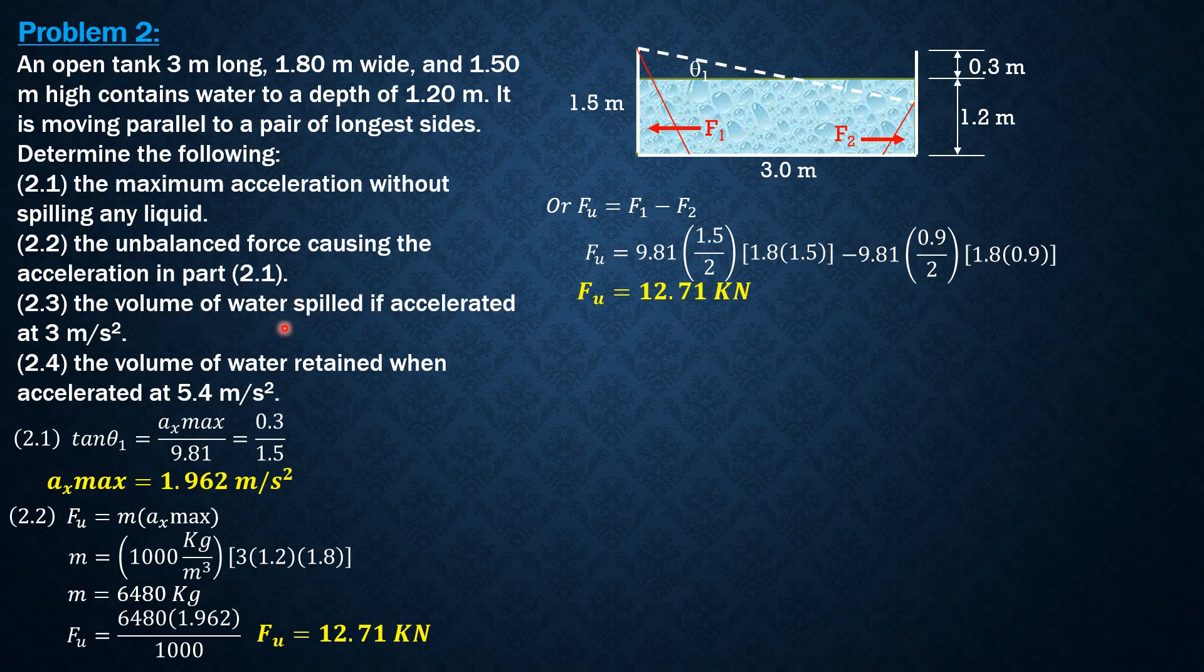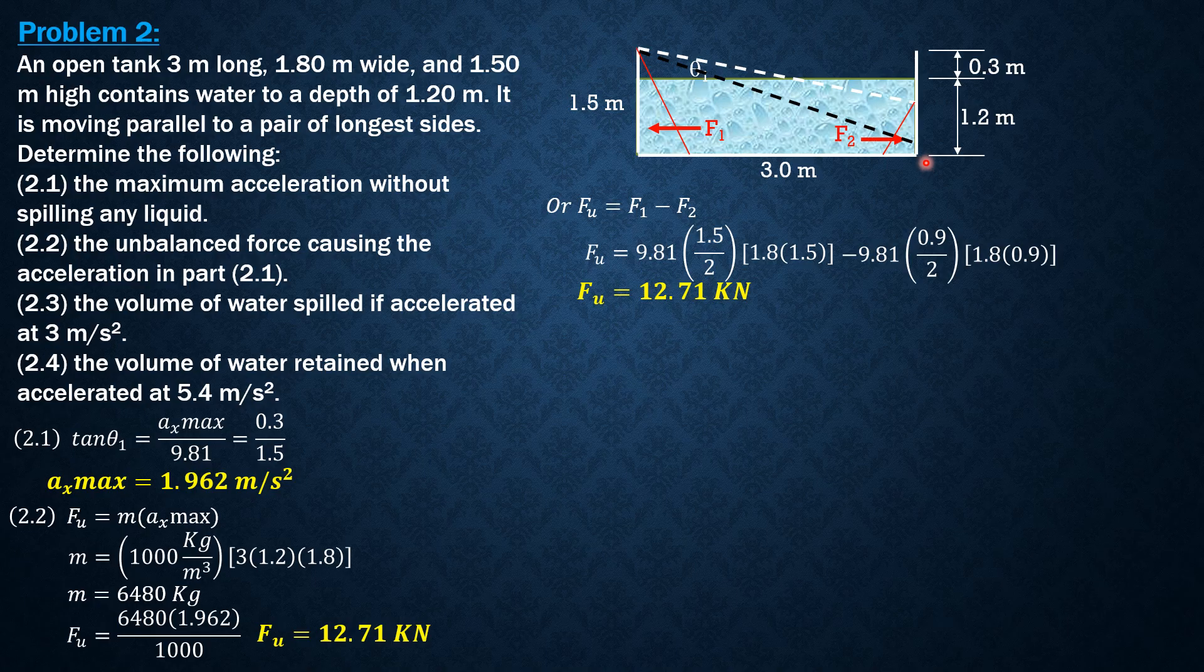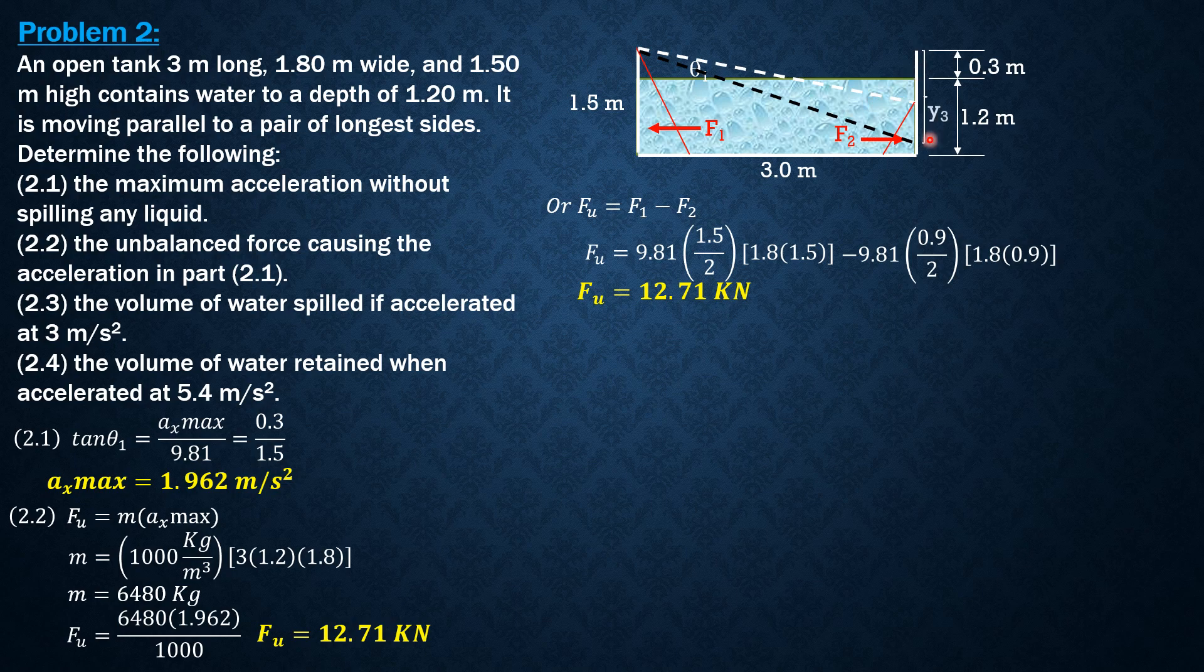Then for 2.3, the volume of water spilled if accelerated at 3 meters per second squared. Because 3 divided by 9.81 is less than 1.5 over 3, which is 0.5, the resulting surface will be as shown. The surface crosses above the front bottom corner. We'll call this Y3, and therefore this is air.